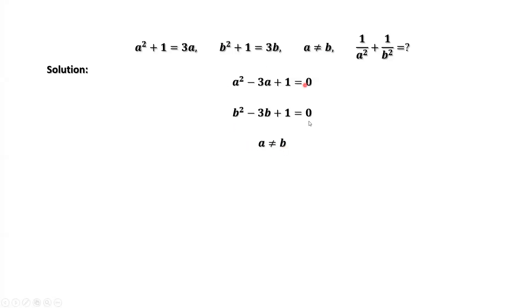From these three conditions, we have the following important result: a and b are two different roots of x squared minus 3x plus 1 equals 0. This is a quadratic equation. It has two roots.